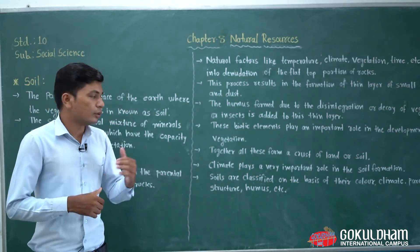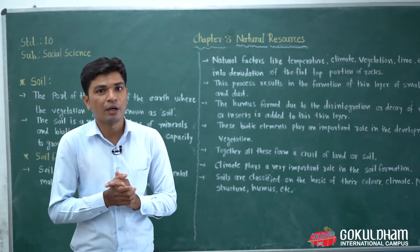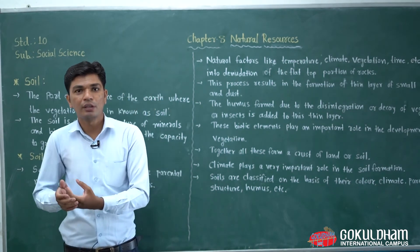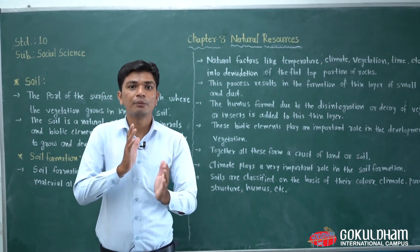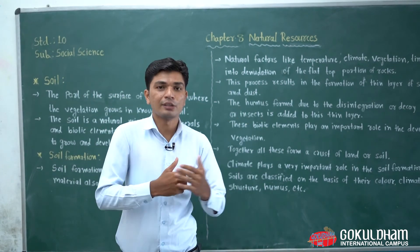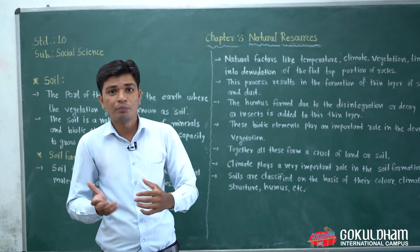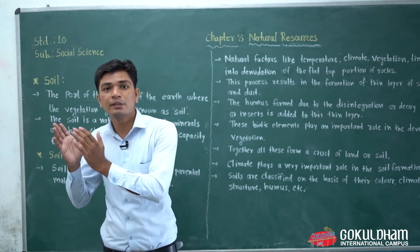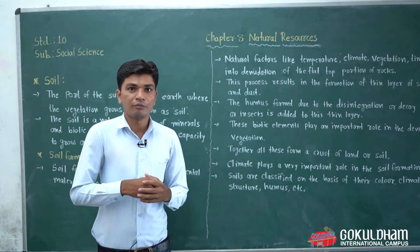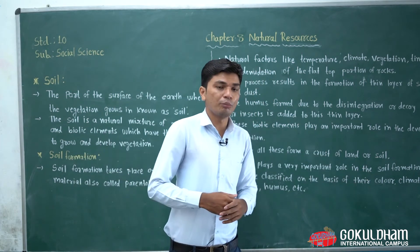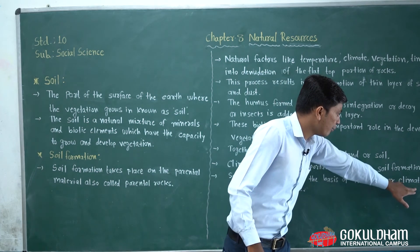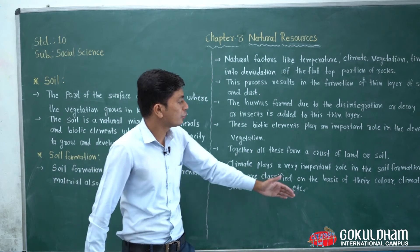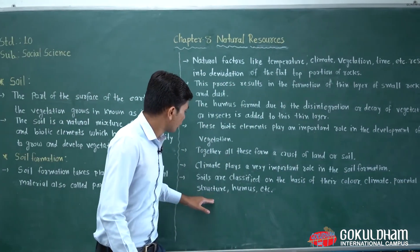Now we will see some classification of soil. We are aware of the variation of soil — we don't get the same soil in each area. For example, in Gujarat, Rajasthan, Madhya Pradesh, Uttar Pradesh, and West Bengal, the soil differs. The factors that affect soil formation and classification are color, climate, parental rocks, structure, humus, etc.